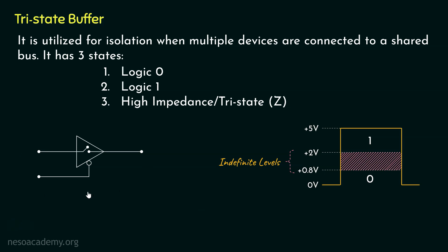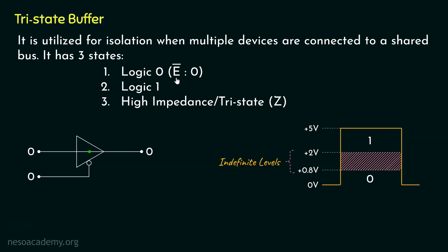Let me remind you how the tri-state buffer works. It has two different inputs. The second input is named 'enable.' From the notation itself — it has a bar on top because it has a bubbled input — if we send zero through this input, the buffer will be activated, meaning the switch inside it will be connected. At the input end, if zero is sent — that is, a voltage within the logic zero range — since the enable input is active, at the output end we will also receive zero, which is known as logic zero, for which the enable input has to be active.